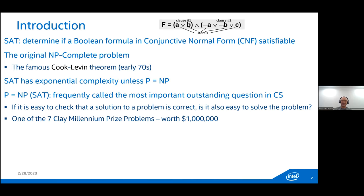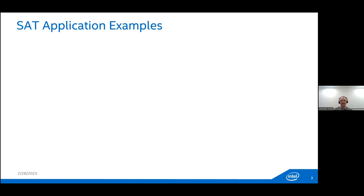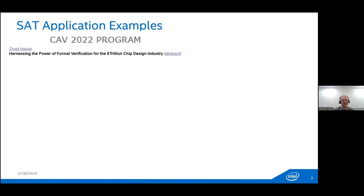SAT is frequently called the most important problem in computer science. You can even earn one million dollars if you can solve whether P equals NP. Beyond its theoretical importance, SAT is widely used in industry — for example, harnessing the power of formal verification for the trillion-dollar chip design industry, where formal verification is SAT-based.